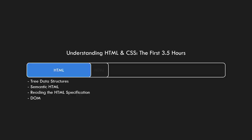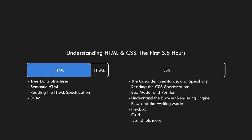In the CSS portion of the course, we'll cover things like the cascade, inheritance, and specificity. You'll understand how to read the CSS specifications. We'll learn about the box model and box position. You'll gain an understanding of the browser rendering engine, and a proper understanding of flow and the writing mode, flexbox, grid, and a lot more.